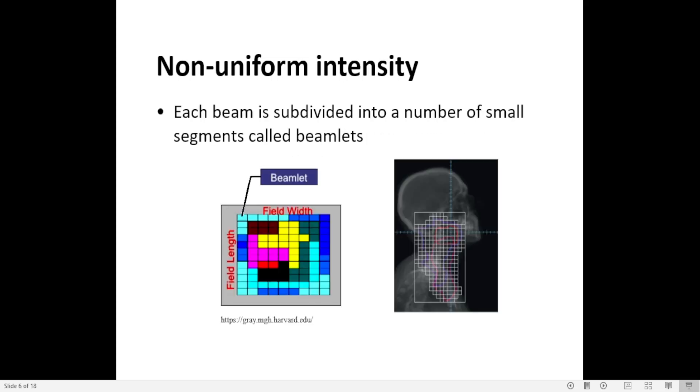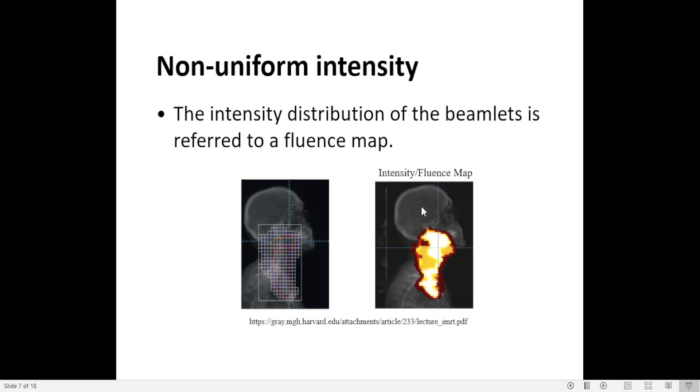In IMRT plan, each beam is subdivided into a number of small segments called beamlets. The picture on the right side here represents IMRT field showing the beamlets, the small segments, and for each of those beamlets an intensity level will be assigned once the optimizer is done. The intensity distribution of the beamlets is referred to as a fluence map, as we can see on the right side here.